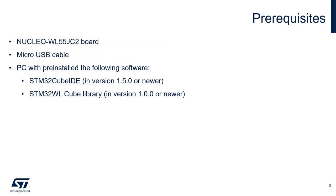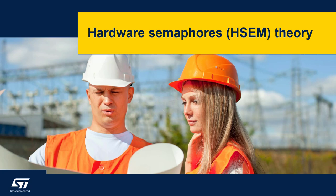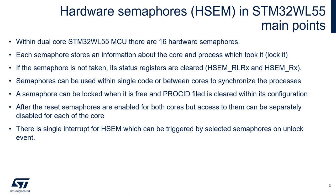The prerequisites for this session are: a Nucleo WL55 JC2 board, a micro USB cable to connect the board to a PC, and a PC with the following software pre-installed: STM32 Cube IDE version 1.6.1 (minimum 1.5.0), the STM32 Cube library for STM32 WL devices in version 1.0.0 or more recent, and the hardware semaphores implementation within STM32 WL libraries.